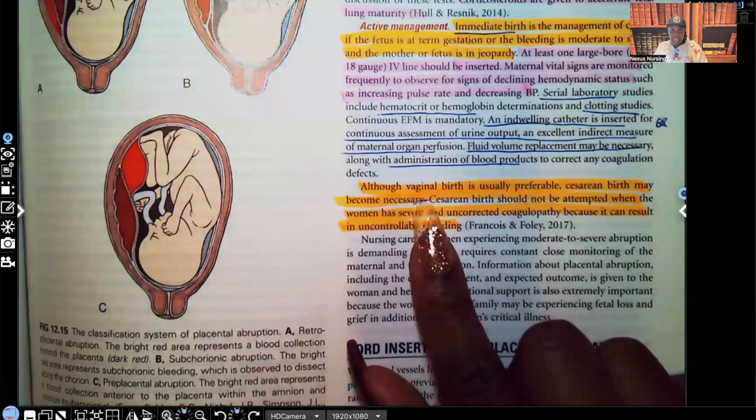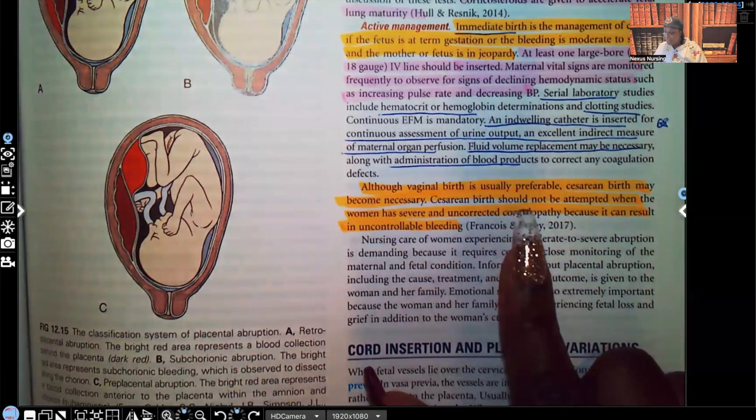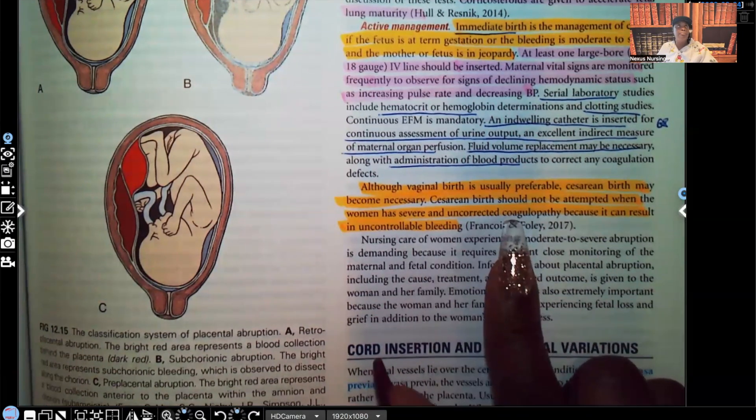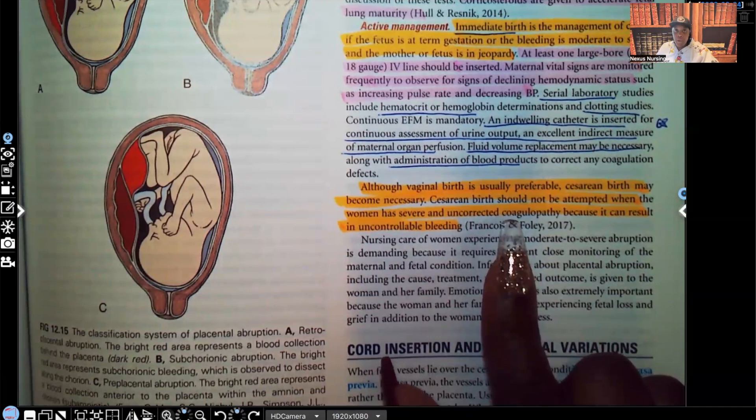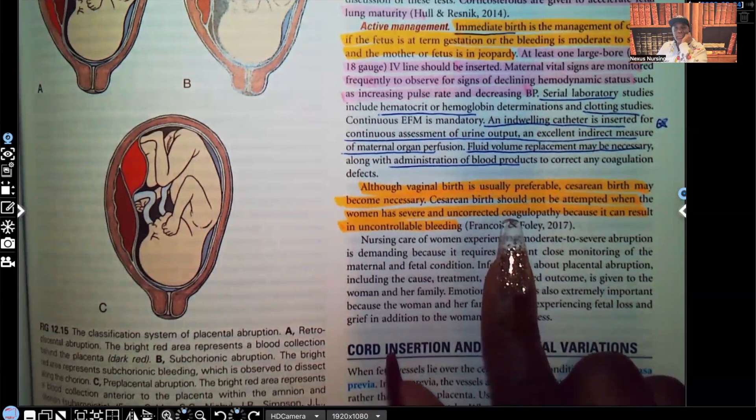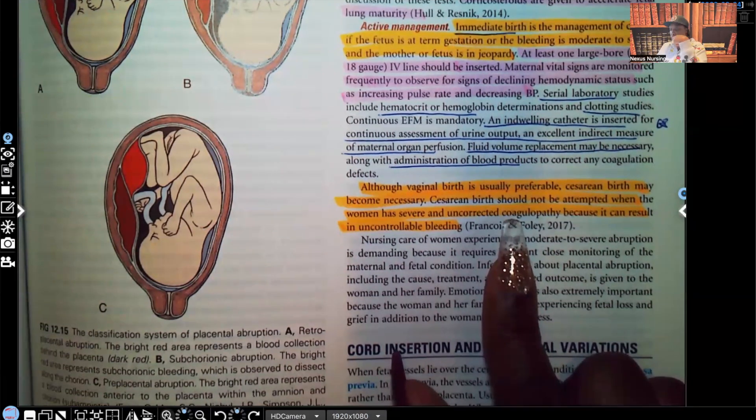Although vaginal birth is preferable, the C-section may be necessary. Cesarean birth should not be attempted when women have severe or uncorrected coagulopathy. And that makes sense. If that coagulopathy is severe or it has not been corrected, they're already bleeding out. They are not clotting the way that they're supposed to stop the bleeding. Does it make sense to cut into them? Absolutely not. If they've got coagulopathy going on and that hasn't been corrected, we're not going to do that. We're not going to be able to control the bleeding and we don't want that patient to bleed out.